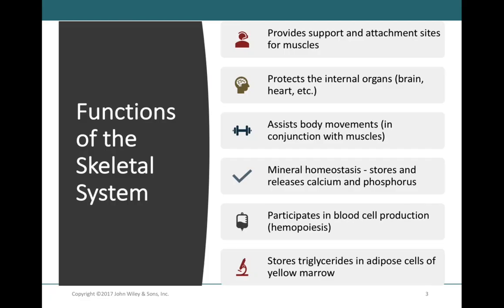The skeletal system provides a support system for the body and allows attachment sites for muscles. Muscles attach to our bones through tendons, and without bones, muscles wouldn't have anything to attach to — skeletal muscles would exist in our bodies without being able to pivot around. Muscles and bones together give our bodies a way to move freely and smoothly, so the skeletal system assists with body movements with the help of the muscular system.